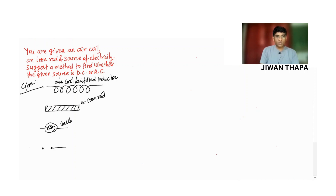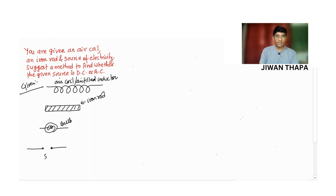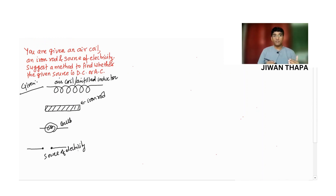This is the bulb and we have a source of electricity. I am drawing it in this way — this is the source of electricity. We need to suggest a method to find whether the given source is DC or AC.